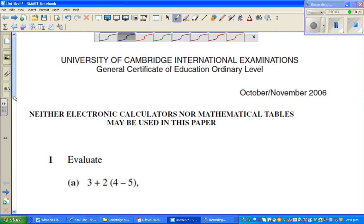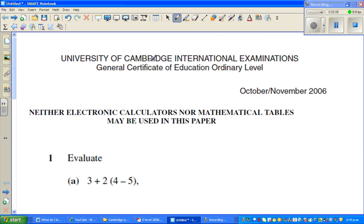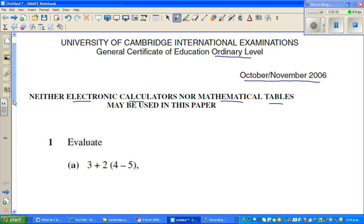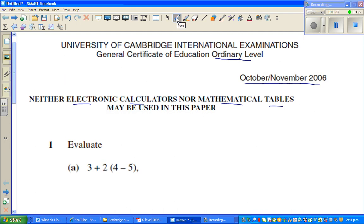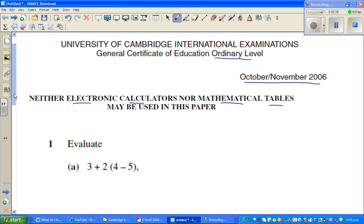Welcome back. In this video, I'm going to start a series of videos on Cambridge International Exams O-Level. These questions have been taken from October November 2006 paper. And the interesting thing is, we are not allowed electronic calculator, no mathematical tables may be used in this paper. So we have to use pen and paper. That's something very good for students. Okay, so let's get started.